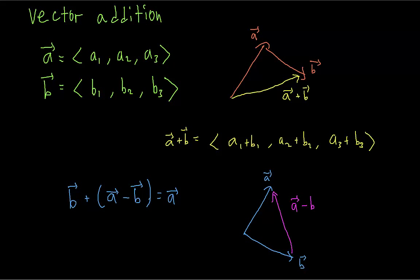In other words, if you line up A and B tail to tail, and you draw the vector from the head of B to the head of A, then that's going to be A minus B. The difference of vectors is the vector that points from the second one to the first one.